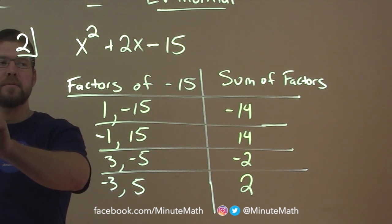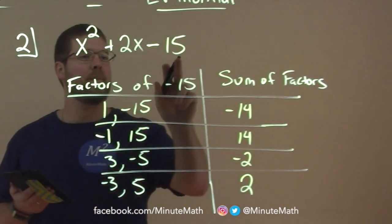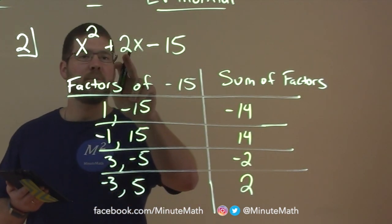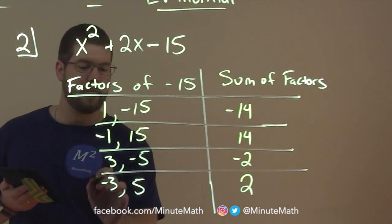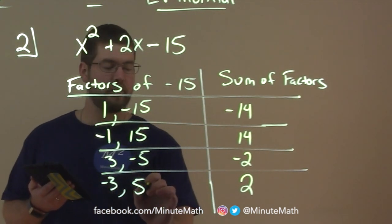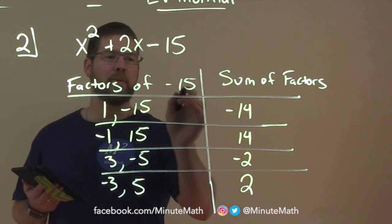Where p times q equals c and p plus q equals b. So what two numbers multiply to be negative 15 but add to be 2, that b value? That's going to be here: negative 3 times 5. When we add them together it's 2, and they multiply to be negative 15.